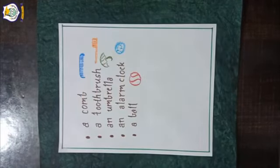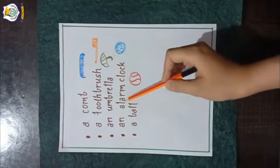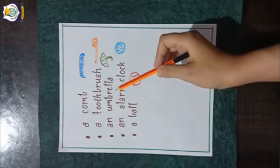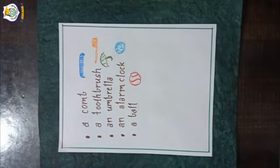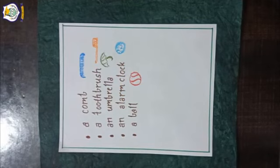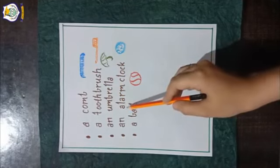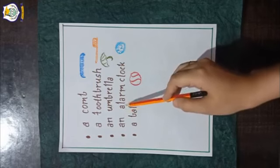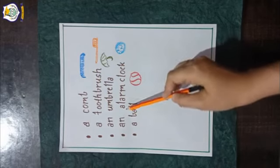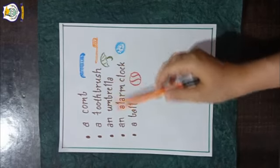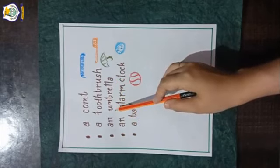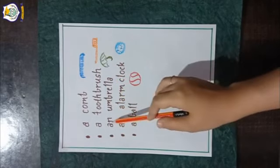There are two words in Shivvy's list that start with a vowel sound. They are 'alarm clock' and 'umbrella'. The word 'alarm clock' starts with a vowel sound 'a', and the word 'umbrella' also starts with a vowel sound 'u'. So we use 'an' before these two words.